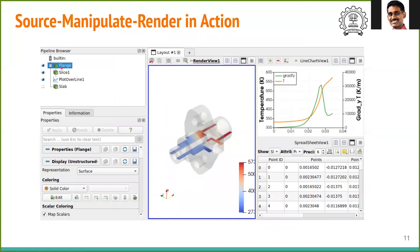In this problem, we have two sources. One is a flange and other is a slab. We will be using only the flange. Opening the flange source, we see a pipeline of manipulations.